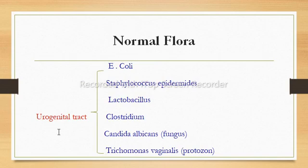The normal flora of the urinogenital tract: the upper urinary tract — kidney, ureters, and urinary bladder — is usually microbe-free. However, in both males and females, the tip of the urethra contains numerous skin bacteria. The female genital tract is shorter than the male and has more complex normal flora, with females at 14 times greater risk of UTI than males. Vaginal epithelial cells produce high amounts of glycogen that Lactobacillus bacteria degrade to form lactic acid, maintaining a pH between 3 and 5. Normal flora of the urinogenital tract include E. coli, Staphylococcus epidermidis, Lactobacillus, Clostridium, Candida albicans, and Trichomonas vaginalis.